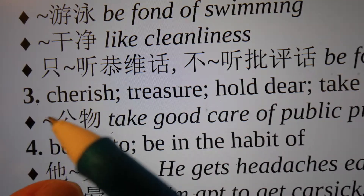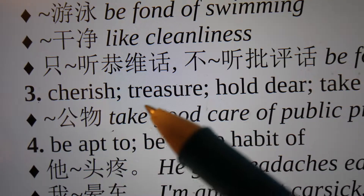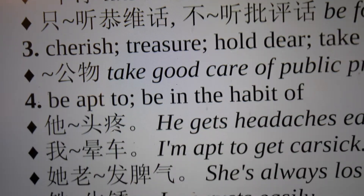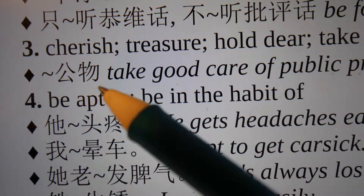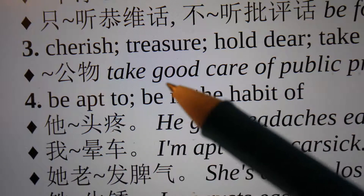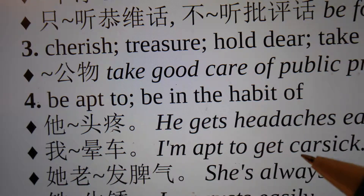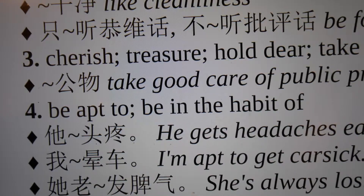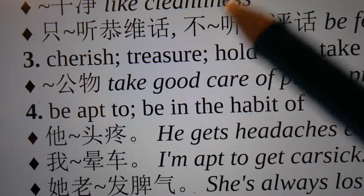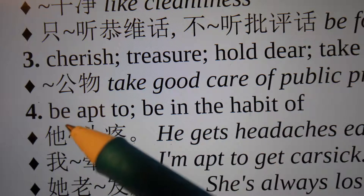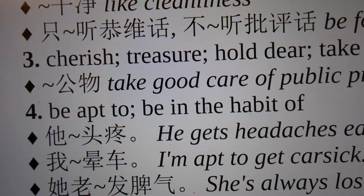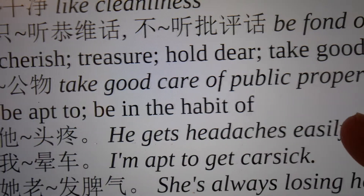The third meaning of 爱 is 'cherish' or 'treasure.' For example, 爱公物 means 'take good care of public property.' So here 爱 carries the sense of cherishing or taking care of something.